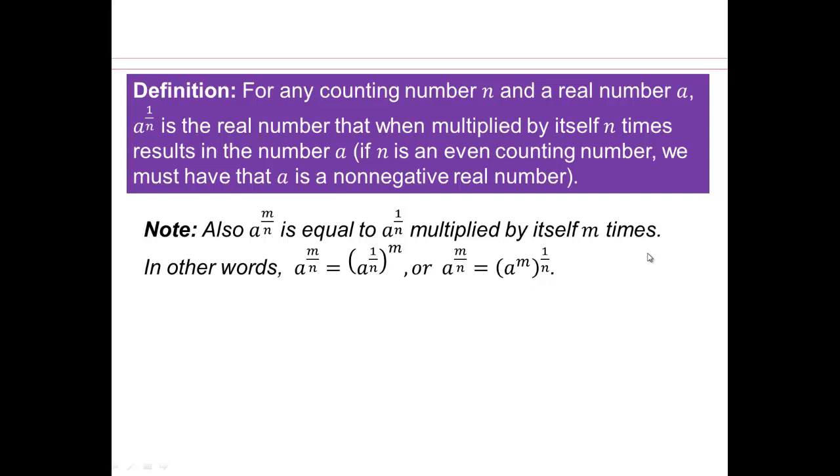Let's take a look at an example then. So a to the power 7 thirds, what's that? That's the same as saying a to the power 2 and 1 third. So if you have an improper fraction, you can write that as a mixed fraction. You already know what a square means. So you have a squared times a to the 1 third. So we can always write rational exponents in such a way that the numerator is always smaller than the denominator.